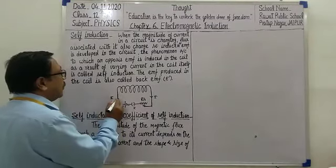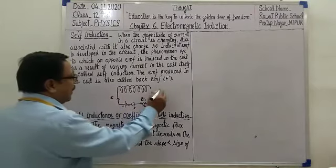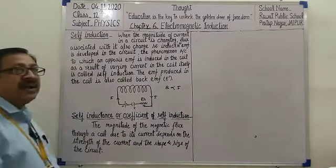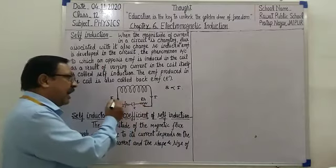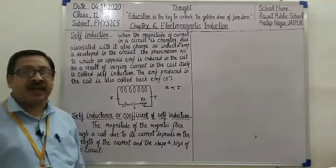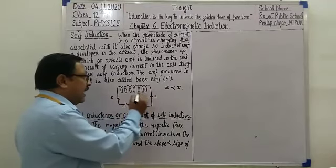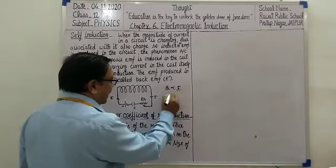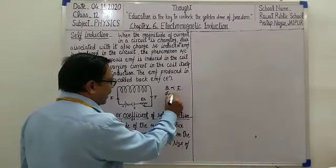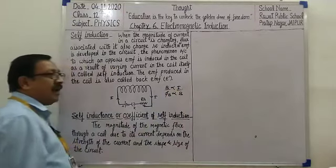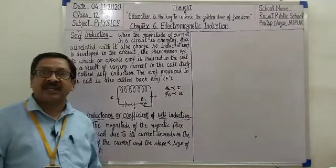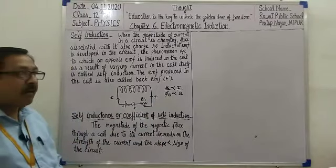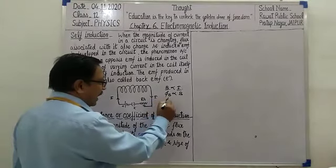According to Oersted's experiment, current is directly proportional to the magnetic field — if we increase current, the surrounding magnetic field will increase, and if we decrease current, the surrounding magnetic field will decrease. Magnetic flux is directly proportional to the magnetic field because magnetic flux equals the product of the magnitude of the magnetic field and the area of the coil.